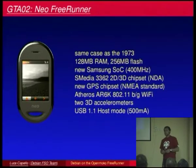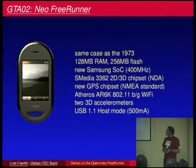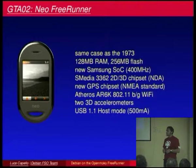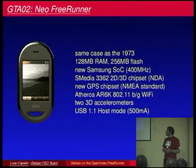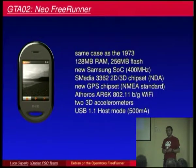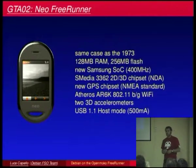The GTA02 is an evolution of the GTA01 with the same case, so skins are interchangeable. RAM is the same, but internal flash memory has been upgraded to 256MB from 64MB. There's a new Samsung SoC with speed improvements. There's an OpenGL accelerated Glamo chipset, but it requires an NDA for documentation. The GPS is a new chipset requiring no binary driver — it outputs NMEA standard via serial port. Wi-Fi is based on Atheros with no firmware needed. Two accelerometers were added, and USB now supports host mode, still USB 1.1.